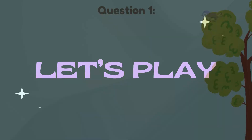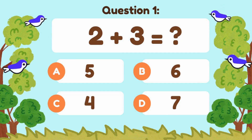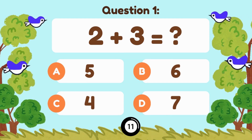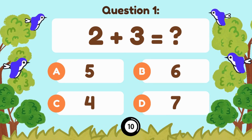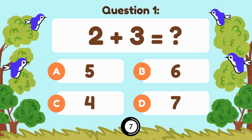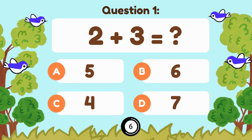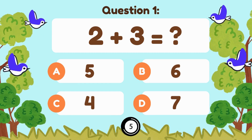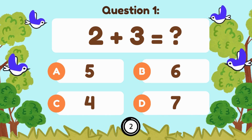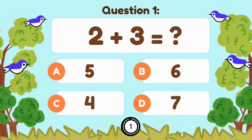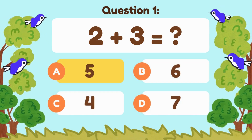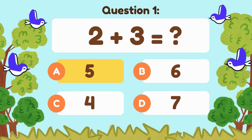2 plus 3 equals... 2 plus 3 is equal to 5.